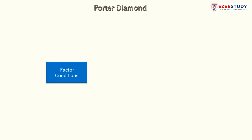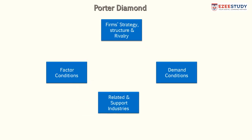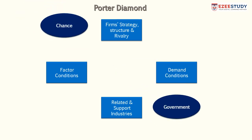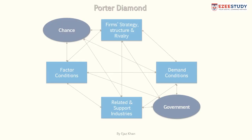What are those factors? The first is the factor conditions, the firm structure, strategy and rivalry, demand conditions, related and support industries, the government itself, and chance. All of these are in some way or the other connected to each other. Let's discuss them one by one and see how these factors give competitive advantage to one nation over the other.